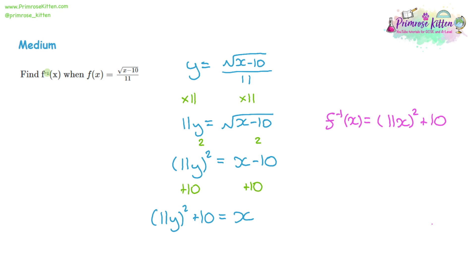One final thing you might want to do is expand the squared brackets. We could say 11 squared is 121, and x squared is x squared — so we could also write it as 121x squared plus 10. Which one is simpler? It's kind of a matter of opinion. We can leave it with the 11x in brackets, which might make any future work a little bit easier, but 121x squared plus 10 is also fine.